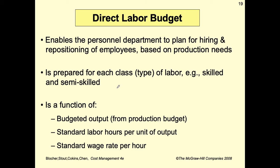The direct labor budget enables the personnel department to plan for hiring and repositioning of employees based on production needs. It is prepared for each class or type of labor, such as skilled and semi-skilled. It is a function of budgeted output from the production budget, standard labor hours per unit of output, and standard wage rate per hour.